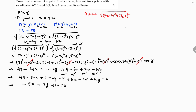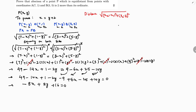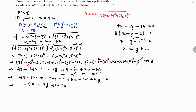Now taking minus 8x to the other side: 8x equals 8y plus 16. Taking 8 as common: 8(x minus y minus 2) equals 0. Dividing both sides by 8: x minus y minus 2 equals 0. Transposing the terms: x equals y plus 2. So clearly, the abscissa is 2 more than the ordinate. In this way, we have proved that x equals y plus 2.